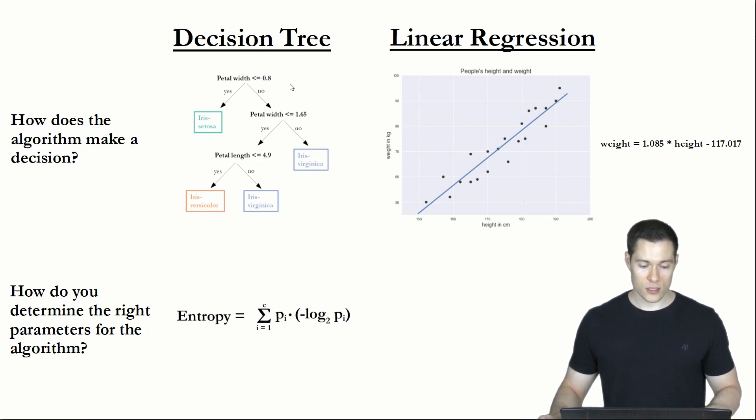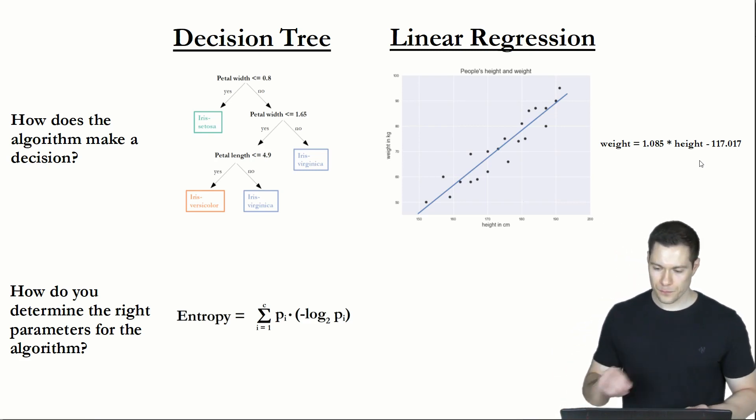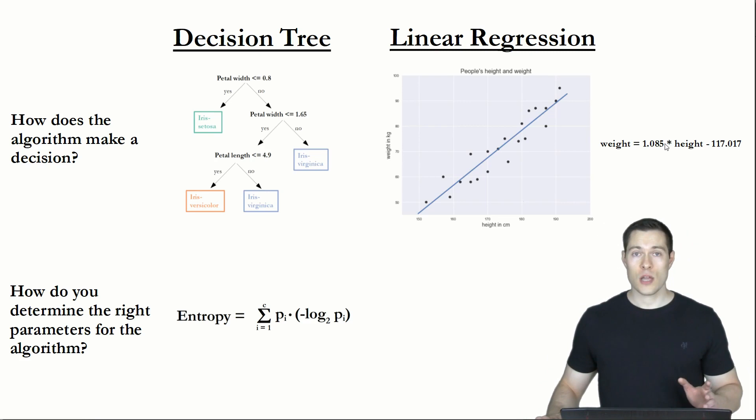And the parameters of the linear regression algorithm are the slope of this line and the y-intercept. If we change the slope, then we can change the steepness of the curve. And if we change the y-intercept, then we can move the line up or down. And if we now want to find the best values for those parameters, so that this line eventually best approximates all those points,